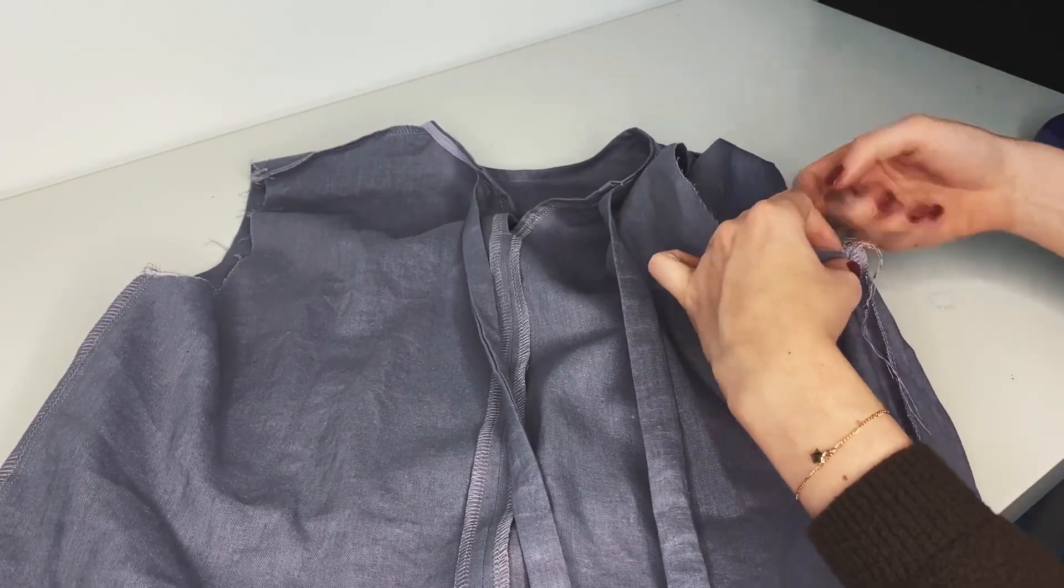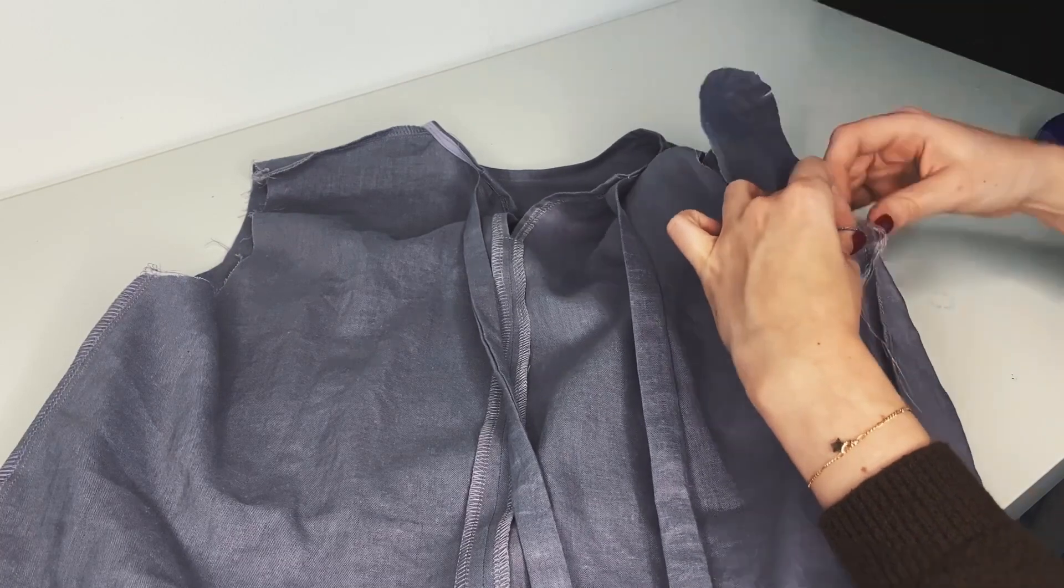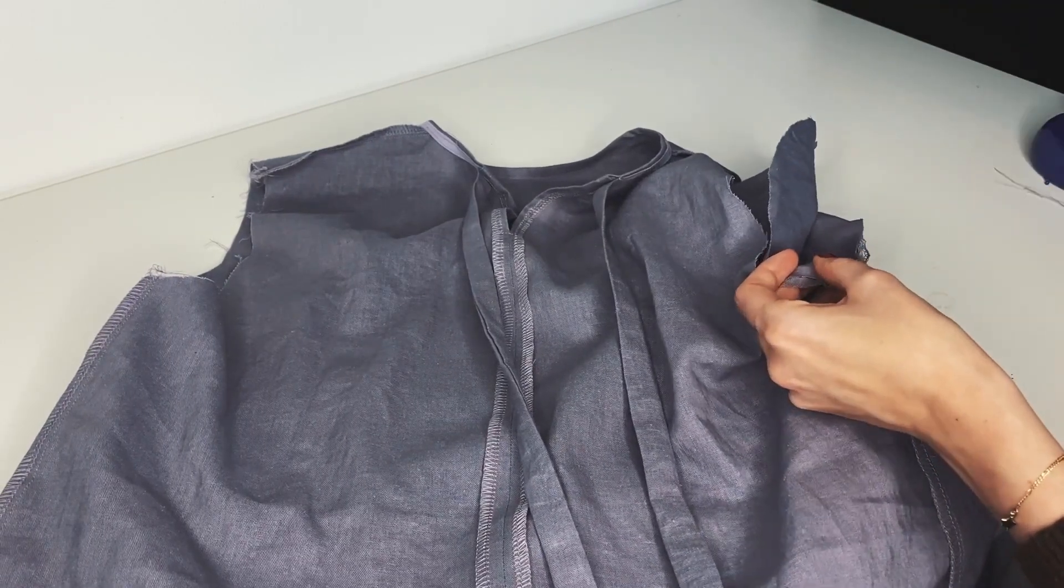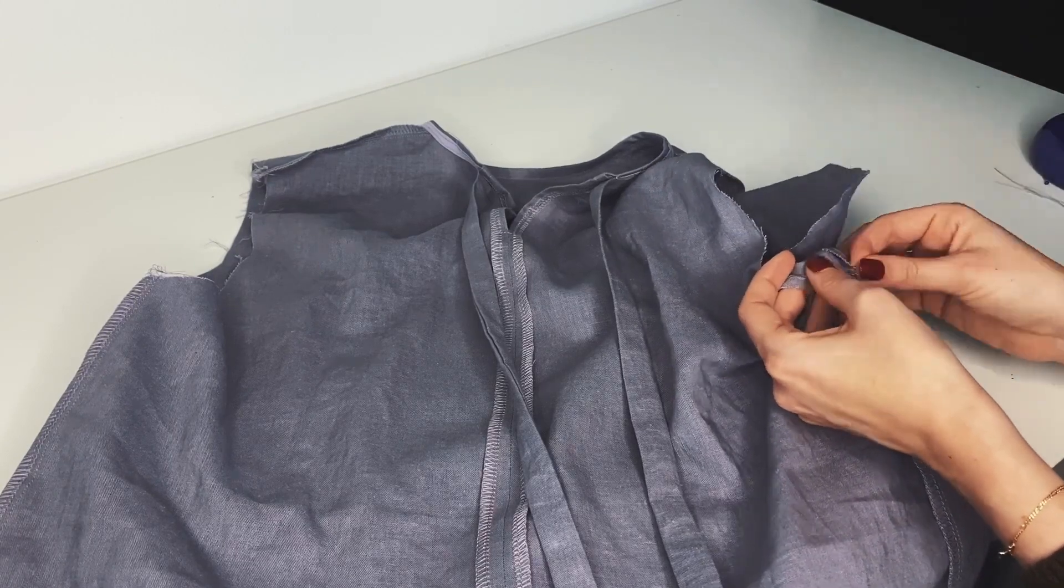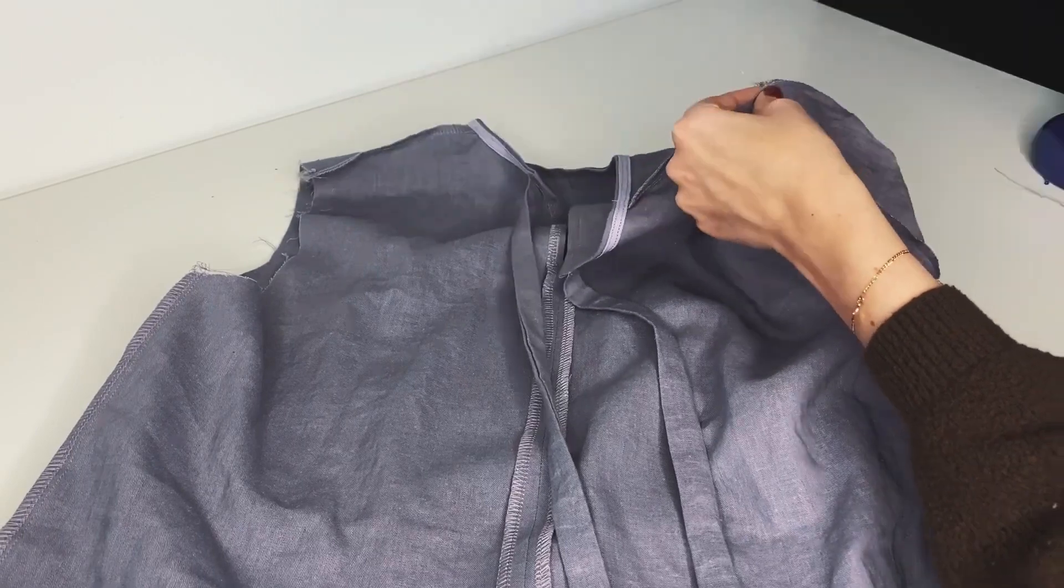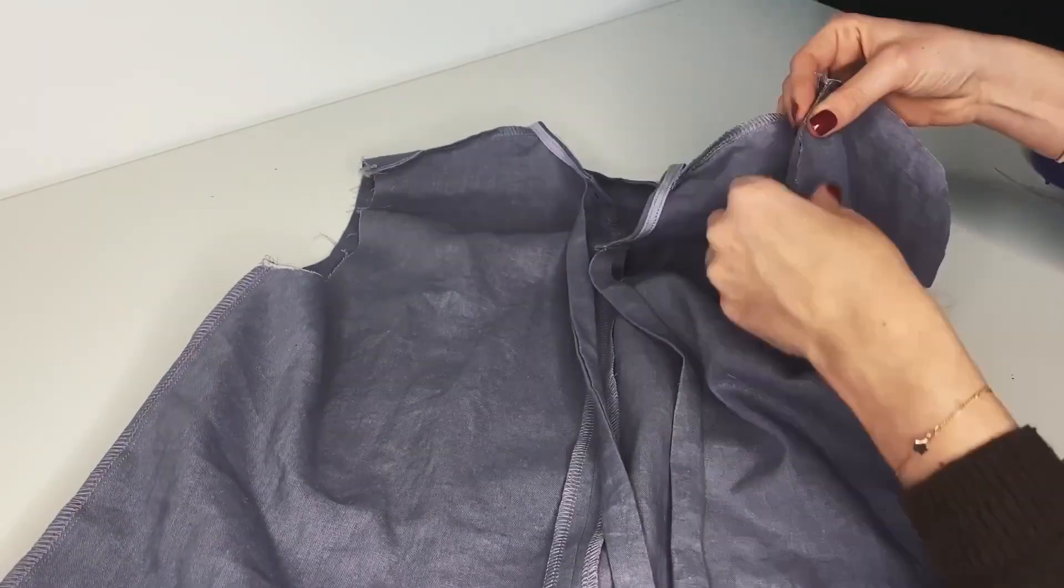Pin the sleeve to the armhole, starting at the side seam of the shirt, that should align with the side seam of the sleeve. Then make sure the top notch of the sleeve aligns with the shoulder seam of the shirt. Then work your way down again on both sides from the top to the side seam of the sleeve.